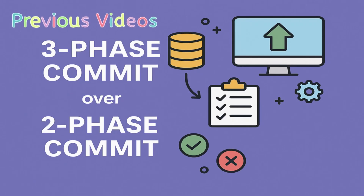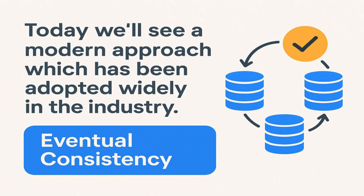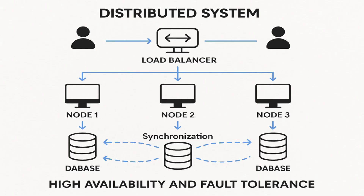In the last two videos, we have looked at two-phase commit and three-phase commit, which are traditional protocols that try to keep the distributed operations in sync. Today, we will see a modern approach which has been adopted widely in the industry. In distributed systems, we have multiple nodes, and data is getting stored at different locations to ensure high availability and make sure our system is more fault-tolerant. With this, we improve the scalability of the system, but at some cost.